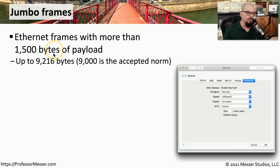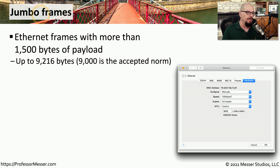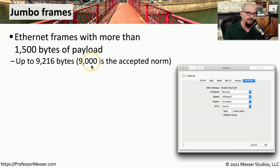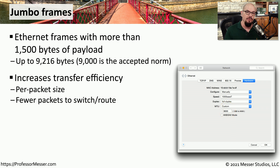A standard Ethernet frame will support 1,500 bytes within a payload. But if you're performing a backup or a very large file transfer, you may find it more efficient to have larger payload sizes. This is supported in Ethernet through a function called jumbo frames, where you can increase the size of the payload up to 9,216 bytes, although it's very common to simply set it to 9,000 bytes. This improves the efficiency of overall traffic because you don't have to send as many frames through the switch or routed network.